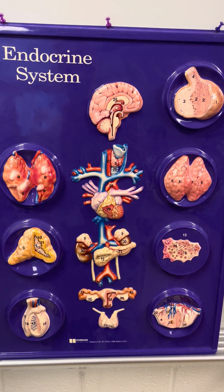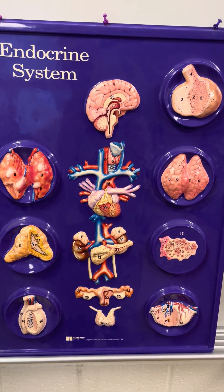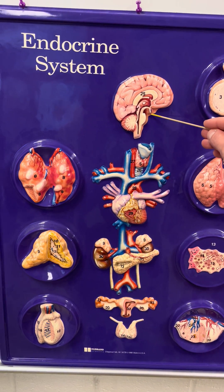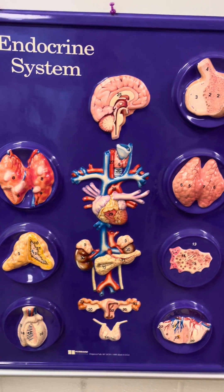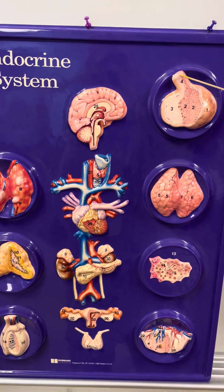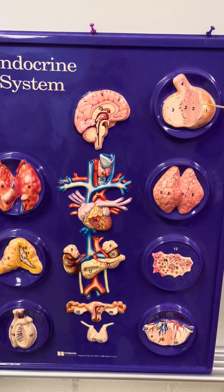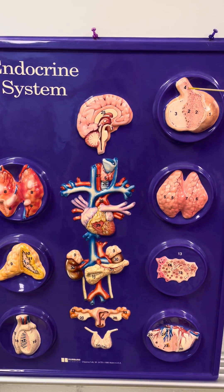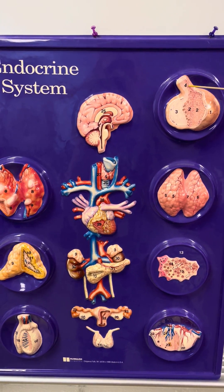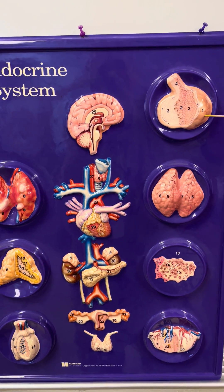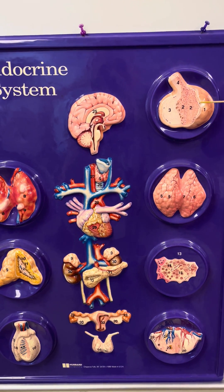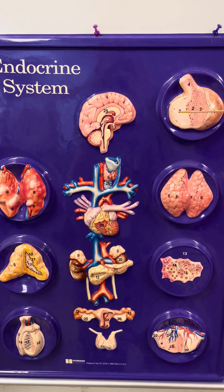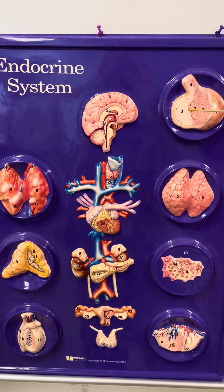This model shows the entire endocrine system, starting with the pituitary gland. Here we can see the pituitary gland in the brain, and this structure is the pituitary gland alone. The stalk of the pituitary gland, number four, is the infundibulum. Number one is the capsule, number two is the anterior pituitary, and number three is the posterior pituitary.